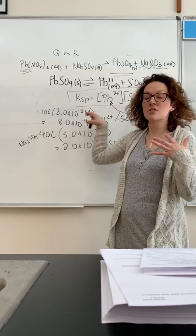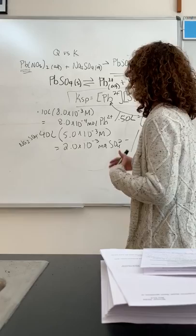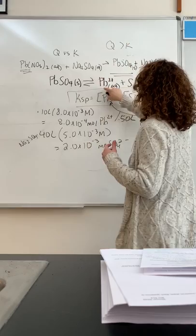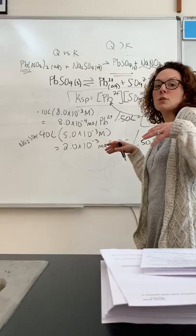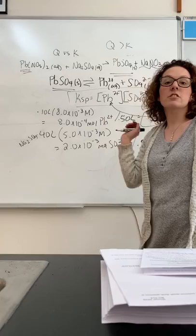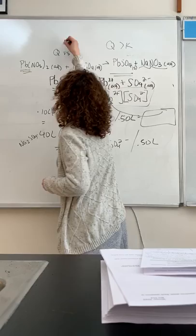The last step would be to look at the K value I get when I plug these concentrations in and compare it to Q. Remember, if Q is bigger than K, that means that I have more product than I need. So the reaction shifts to the left. If the reaction is shifted to the left, I have a precipitate.